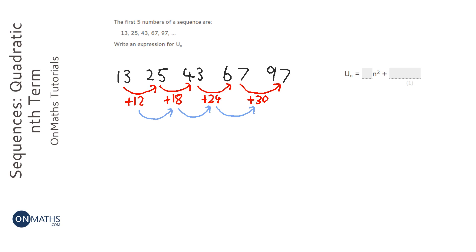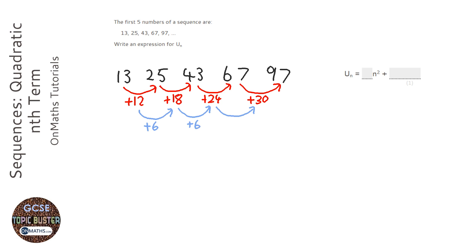Let's check to see if there's a second difference. That's add 6, this is add 6, and this is add 6. So we know it's a quadratic sequence — it's going to involve an n squared somewhere.